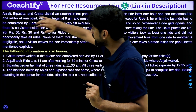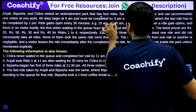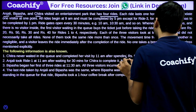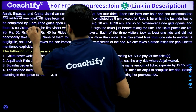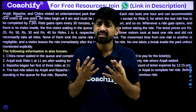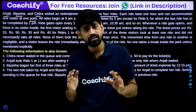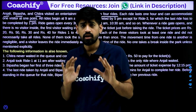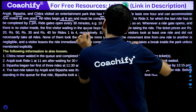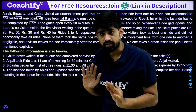Let's begin. The puzzle says that Anjali, Bipasha, and Chitra — that means A, B, and C — visited an entertainment park that has four rides. So we have three visitors and four rides. Each ride lasts one hour and can accommodate one visitor at a time. All rides begin at 9 a.m. and must be completed by 5 p.m. This is one constraint that limits the information and reduces our cases.